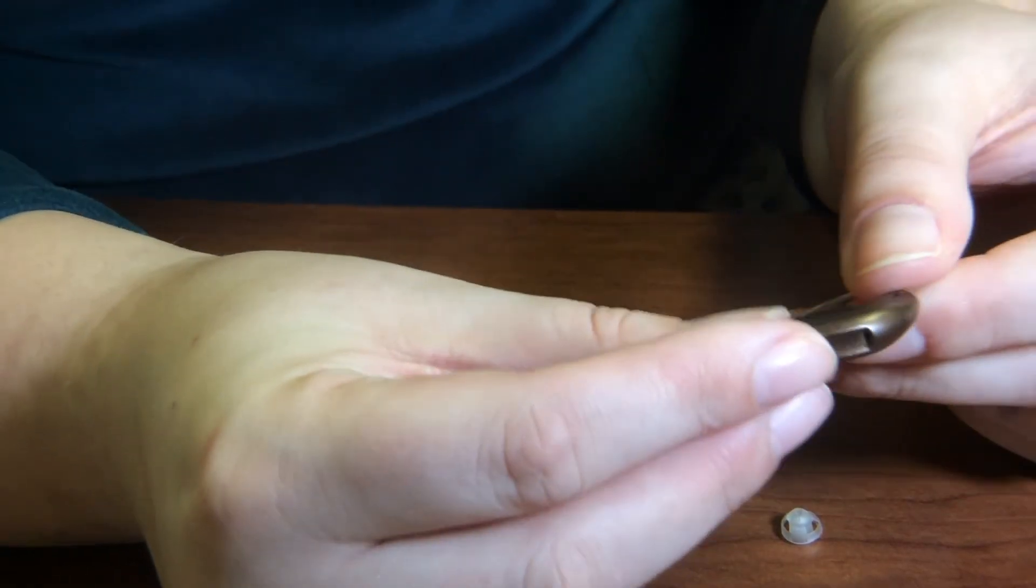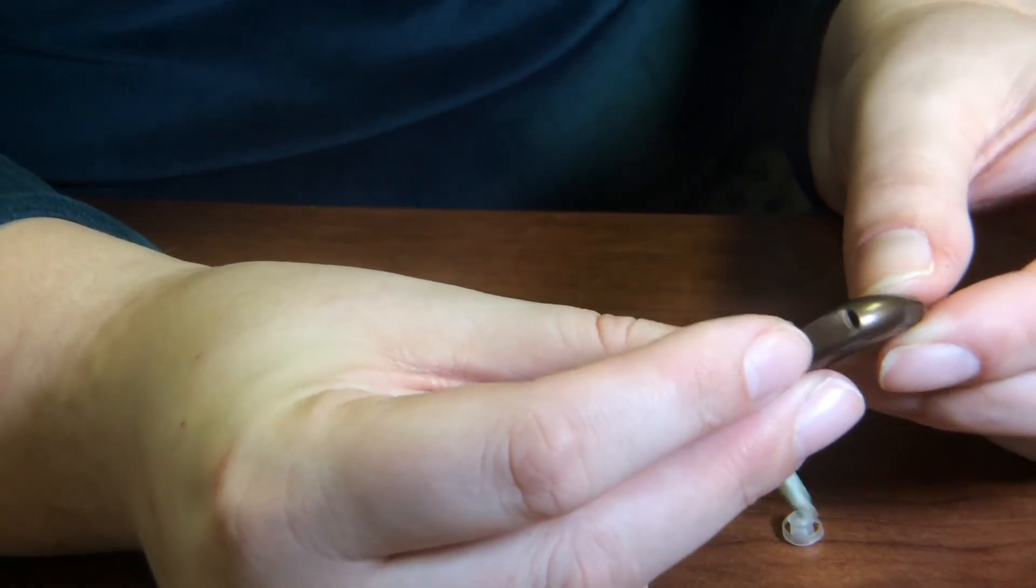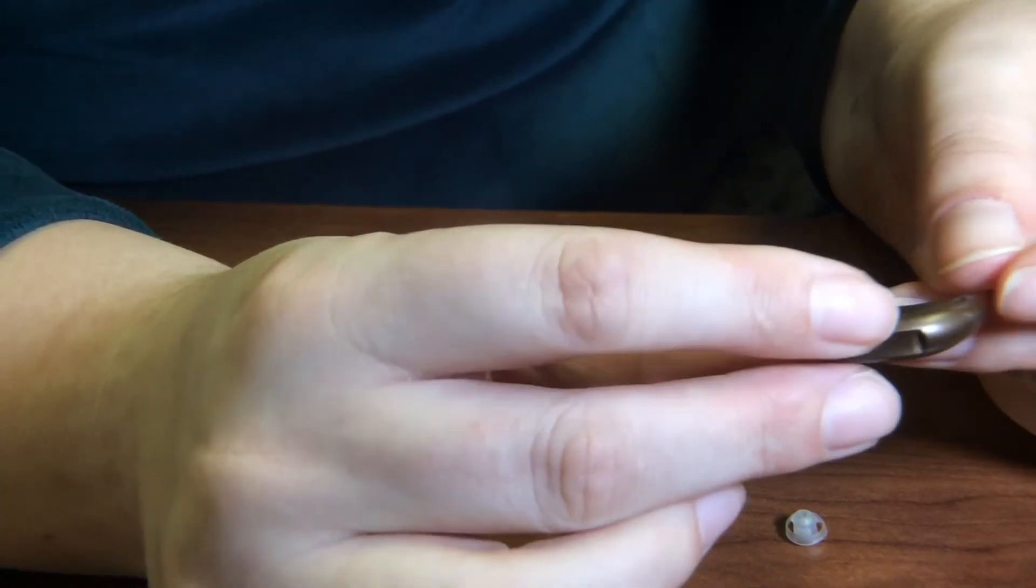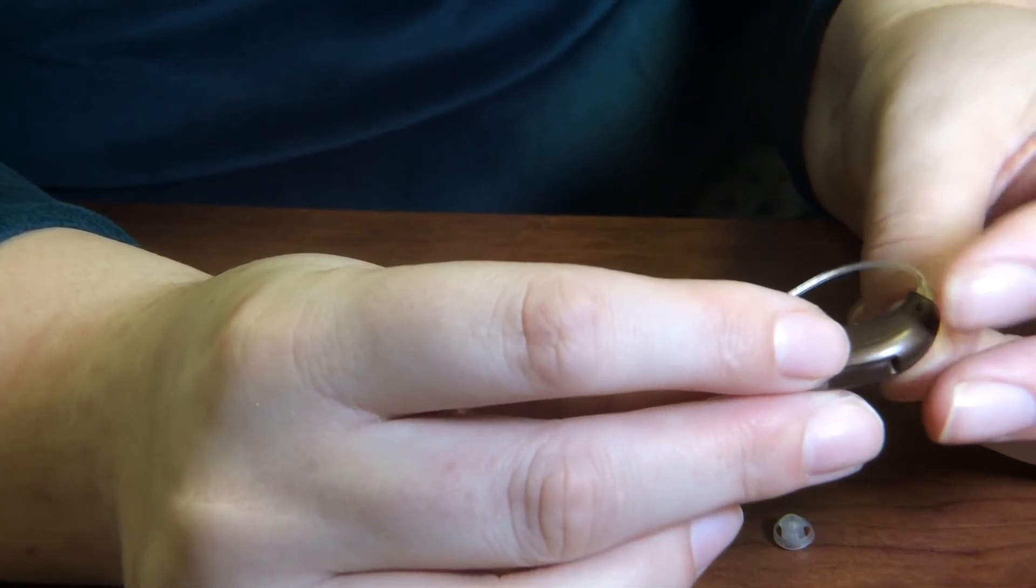And then on the body of the hearing aid, we want to make sure that there is no built-up debris, that the button can depress appropriately, and that there's no cracking in the shell.